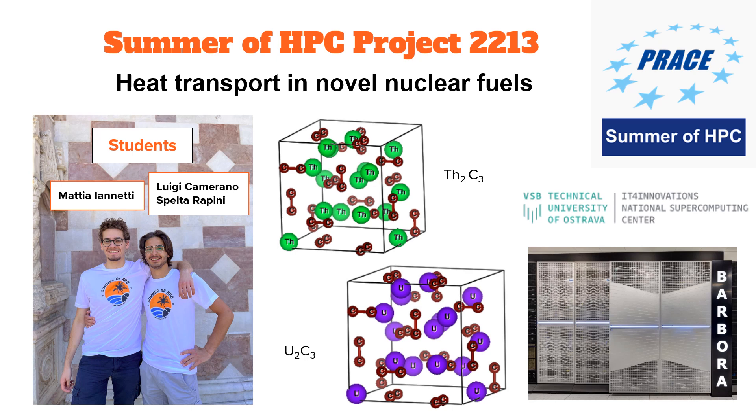We were working with IT4i supercomputer center in Ostrava with supervisor Dominic Legut. In particular we did calculation with Barbara, a cluster that consists of 200 compute nodes totaling more than 7,000 compute cores. We are based in L'Aquila, a little city in the middle of Italy. You can see us in the photo on the left in front of the Basilica di Collemaggio.